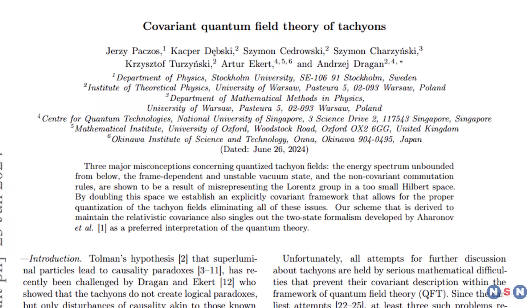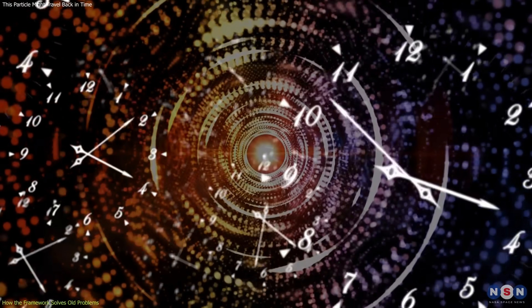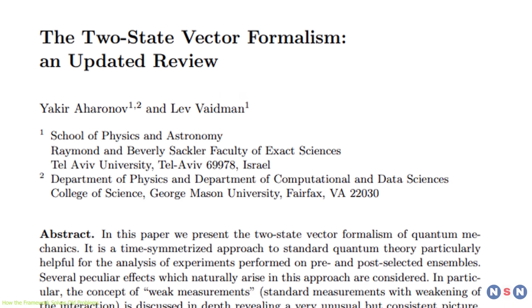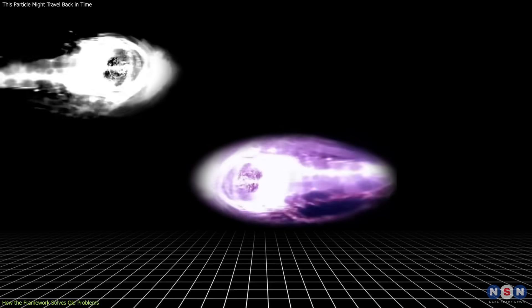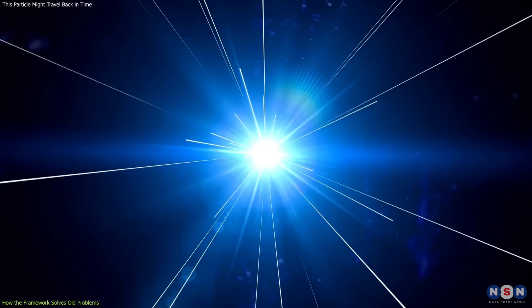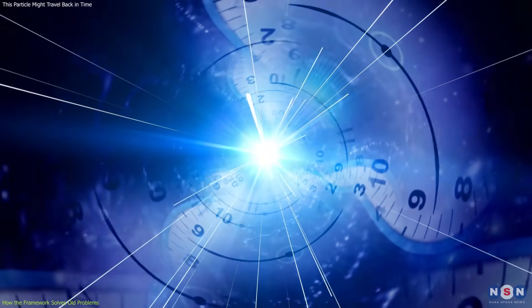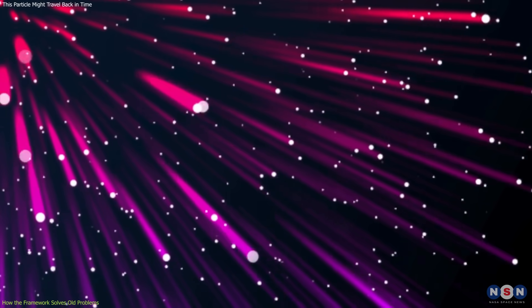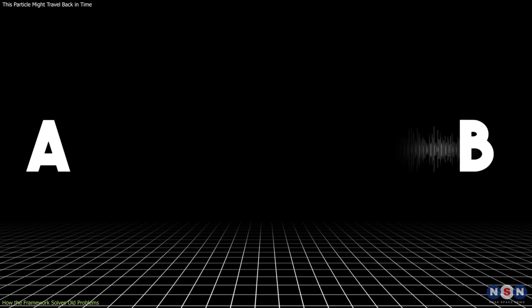At the heart of this new model is a subtle shift in how we think about time in quantum systems. Most physical models evolve forward from an initial state. The two-state formalism, by contrast, defines a system's behavior using both where it starts and where it ends. This allows for processes that appear time-symmetric, where past and future are equally important in shaping events. Applied to tachyons, this symmetry helps explain apparent backward-in-time motion without creating paradoxes.